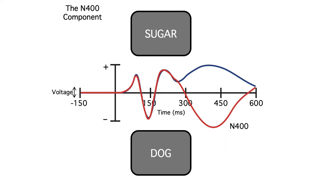The N-400 appears to reflect the work your brain is doing as it tries to figure out what the word is and how it fits into the sentence. If more work is needed, you get a larger N-400. And the size of the N-400 for a given word reflects the extent to which that word can be predicted from the preceding context. As a result, you don't need bizarre sentences like I take my coffee with cream and dog to see the N-400.